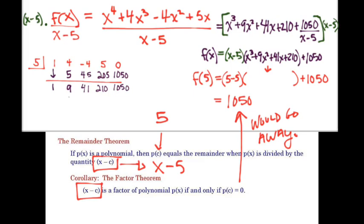Otherwise, it's going to be the value at p of c is going to be, so if I wanted to figure out quickly what f of 5 would be, I would just figure out the remainder when I do the synthetic division. All right, good luck.